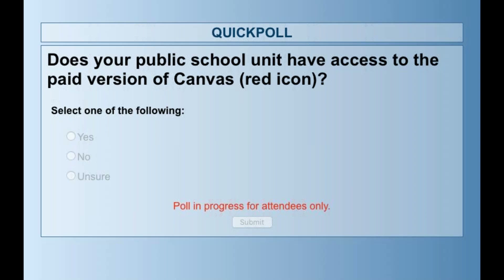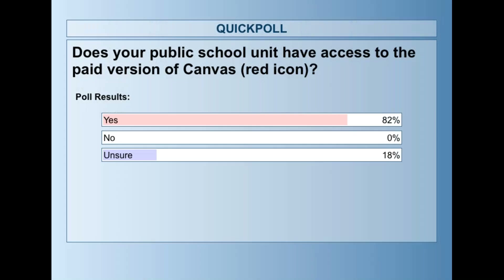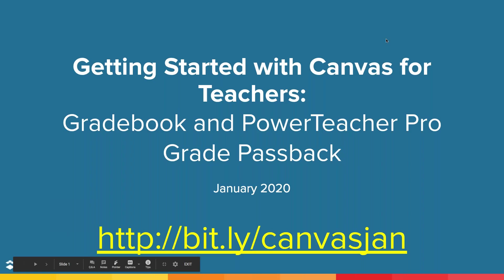So we're going to share the results there. It looks like we have most folks that do, and we have a few that are unsure. As Pam mentioned, on your NCA cloud or IAM dashboard, if you have a red Canvas icon — Wake County yours is a different color, but just know you do have the paid version. Anybody else, if you have a red Canvas icon, then you do.